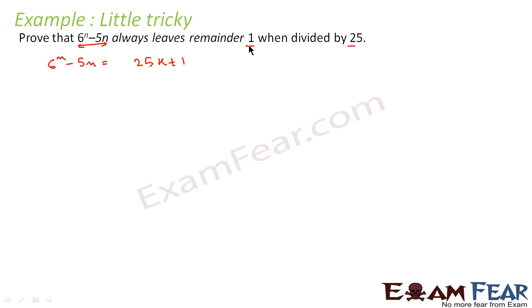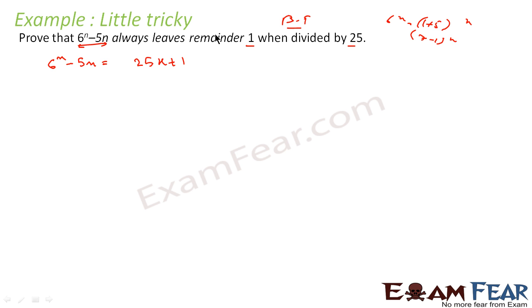Now we have to prove this. We can see it is 6 to the power n, so this is a question of binomial theorem. Now we can write 6 to the power n as 1 plus 5 to the power n, or as 7 minus 1 to the power n — any form. But we notice that we have 25 and 5 in the problem, where 5 equals 5 to the power 1, 1 equals 5 to the power 0, and 25 equals 5 to the power 2.